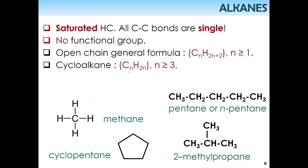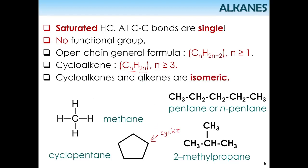For cycloalkane, the formula is CnH2n. This is CnH2n for cyclic structures. And cycloalkanes are actually functional group isomers with alkenes — alkenes have the double bond structure. So cycloalkanes and alkenes are functional group isomers, which is why they are said to be isomeric.